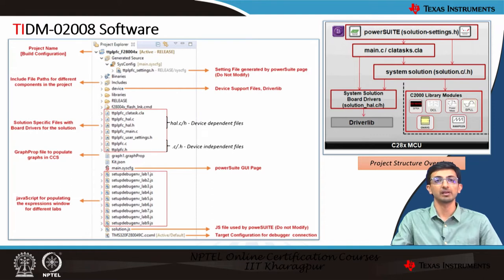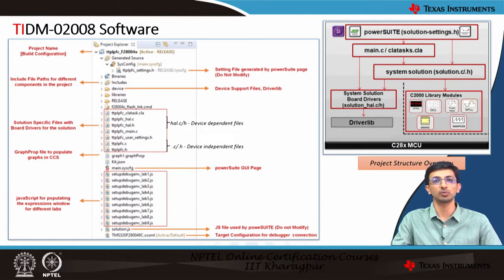The main file contains all necessary initialization. Then there is the solution dot C — that is Totem Pole PFC dot C as well as Totem Pole PFC dot H files — which are device-independent files. Whatever device you choose, you need not update these two files. For whatever device you need to use, you only need to update the HAL dot C as well as HAL dot H files.